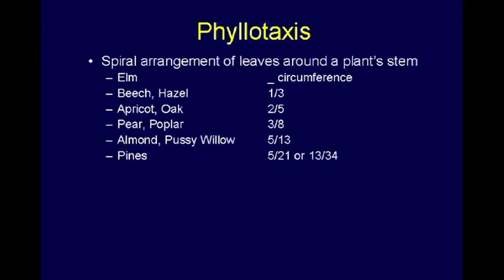There's a study among scientists called phyllotaxis and that's where you study the arrangement of leaves around the stem of a plant. Visualize taking a plant and taking a cross section and seeing how the leaves are ordered in the plant. It turns out the elm always has one half the circumference, the beech or the hazel has one third, the apricot and the oak have two every five, the pear, the poplar has three eighths. Each one of these, the almond, the pussy willow, pine trees are always five to 21 or 13 to 34. These are all Fibonacci numbers.